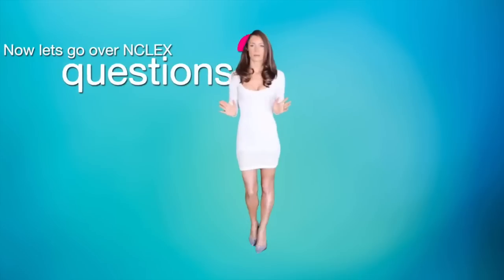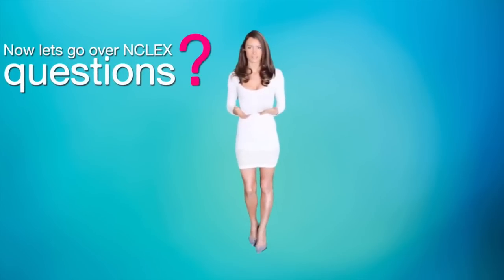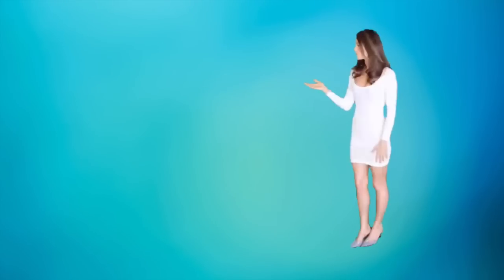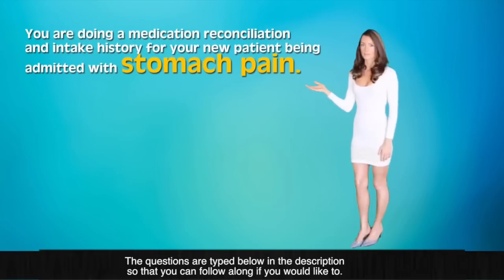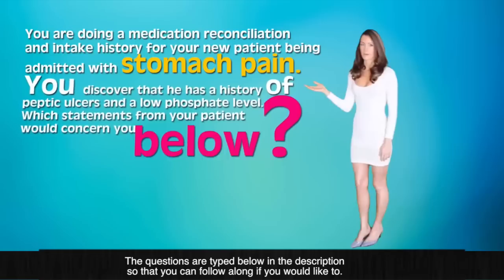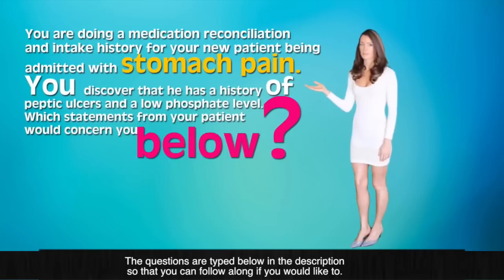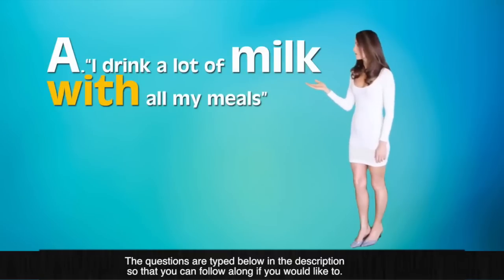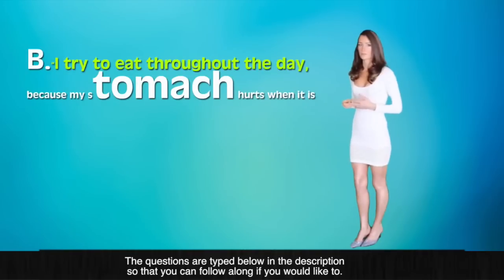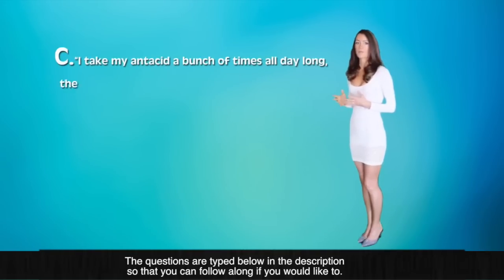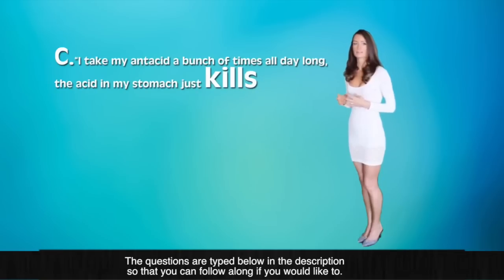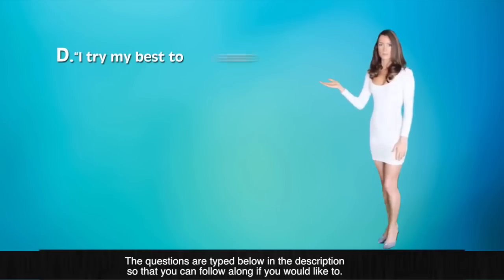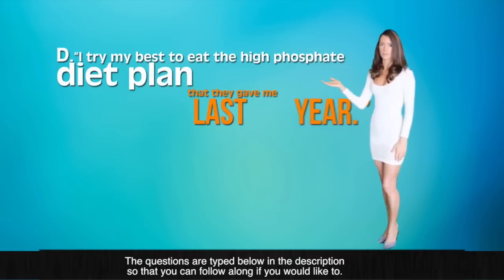Now let's go over some NCLEX-style questions so that you can gain further understanding. Question number one. You are doing a medication reconciliation and intake history for your new patient being admitted with stomach pain. You discover that he has a history of peptic ulcers and a low phosphate level. Which statement from your patient would concern you below? A. I drink a lot of milk with meals. B. I try to eat throughout the day because my stomach hurts when it's empty. C. I take an antacid a bunch of times all day long. The acid in my stomach just kills me. Or D. I try my best to eat the high phosphate diet plan they gave me last year.